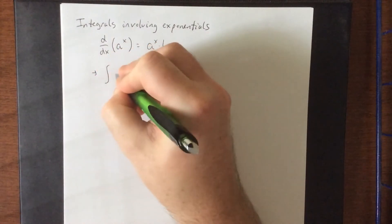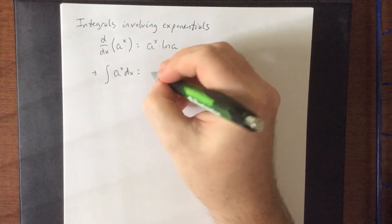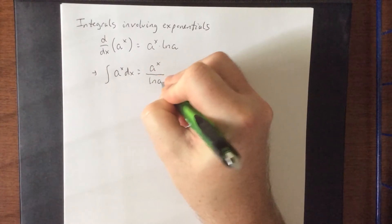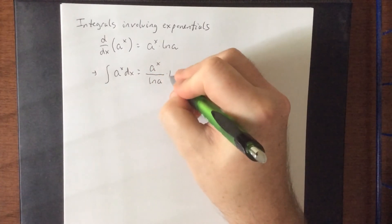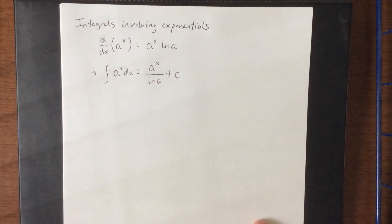It is because of this that if I were to integrate a to the x dx, I would get the exact same exponential, but instead of multiplying by the natural log of a, I would divide by the natural log of a. And of course, because it was an indefinite integral, we'll tag on a plus c as well.